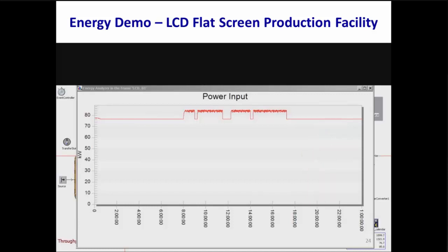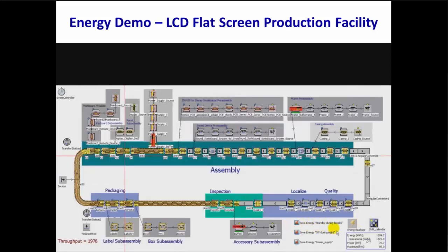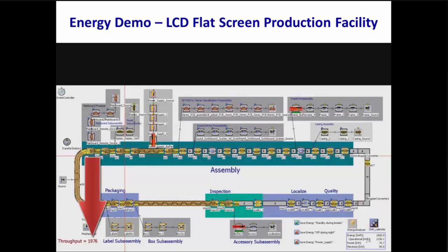After looking at this chart, you may have guessed that we could save energy by switching to standby during breaks instead of leaving everything in the operational state. To do that in our model, all you have to do is check the onscreen save energy standby during breaks checkbox. Now after running our model for one day, the Energy Analyzer's display panel shows that we have decreased total power consumption from 1,899.7 kWh to 1,820.9 kWh, achieving these savings without any decrease in throughput.